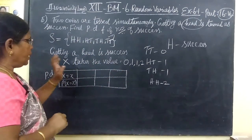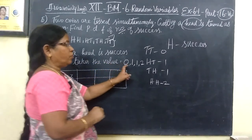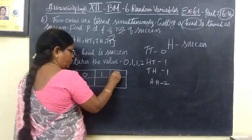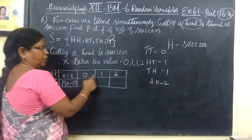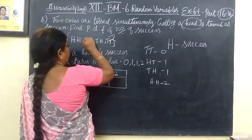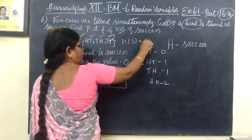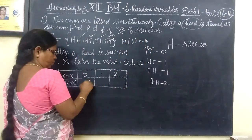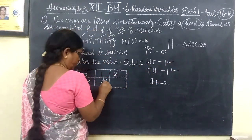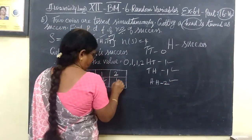The random variable X takes the values 0, 1, and 2. Zero occurs one time, so probability is one by four. One occurs two times, so probability is two by four. Two occurs one time, so probability is one by four.